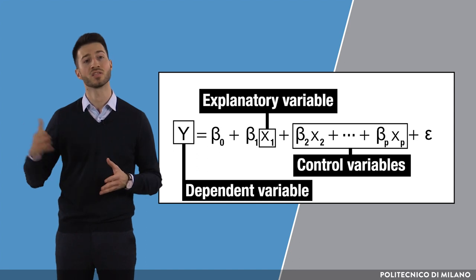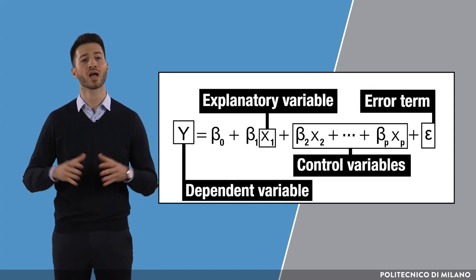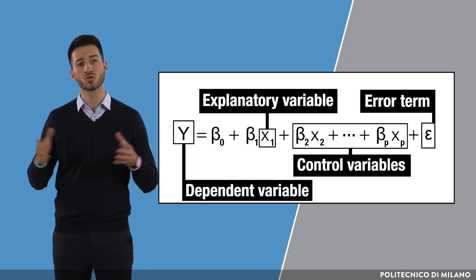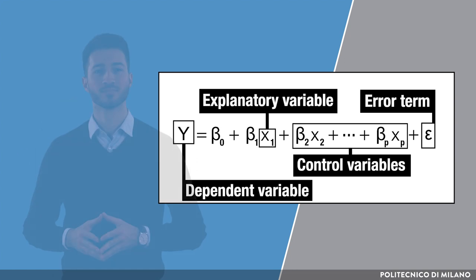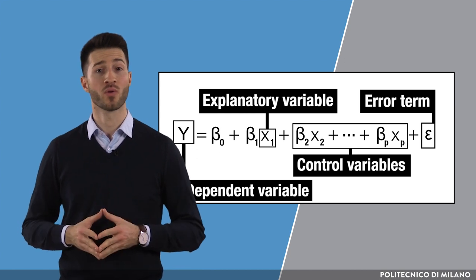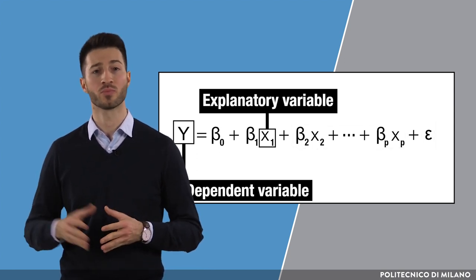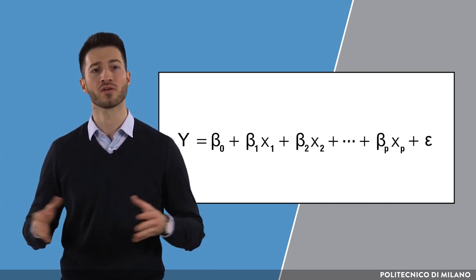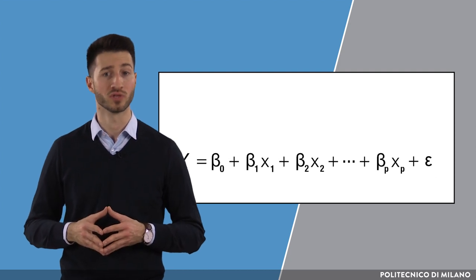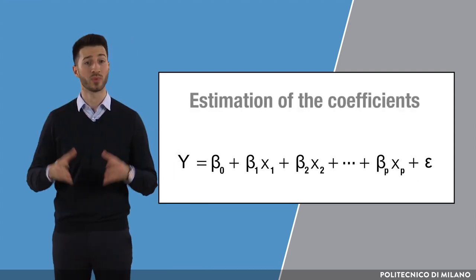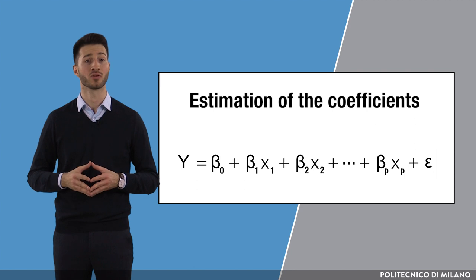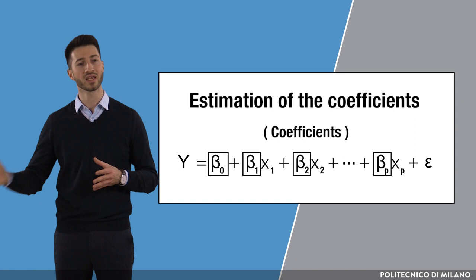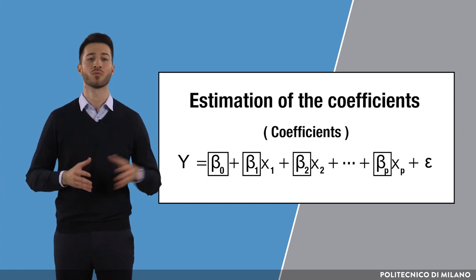And finally, there is an error term which accounts for all the unobserved residual variance — that is, all the things we are not able to measure that could influence the outcome. Putting together this model requires good understanding of the phenomena, including the policy program instruments, the targeted activities, as well as the portfolio of other related policy programs and socio-economic and institutional conditions. Once the model is built based on the theoretical and practical know-how, one can use different estimators to empirically test the relationships between the right-hand side variables and the outcome of interest.